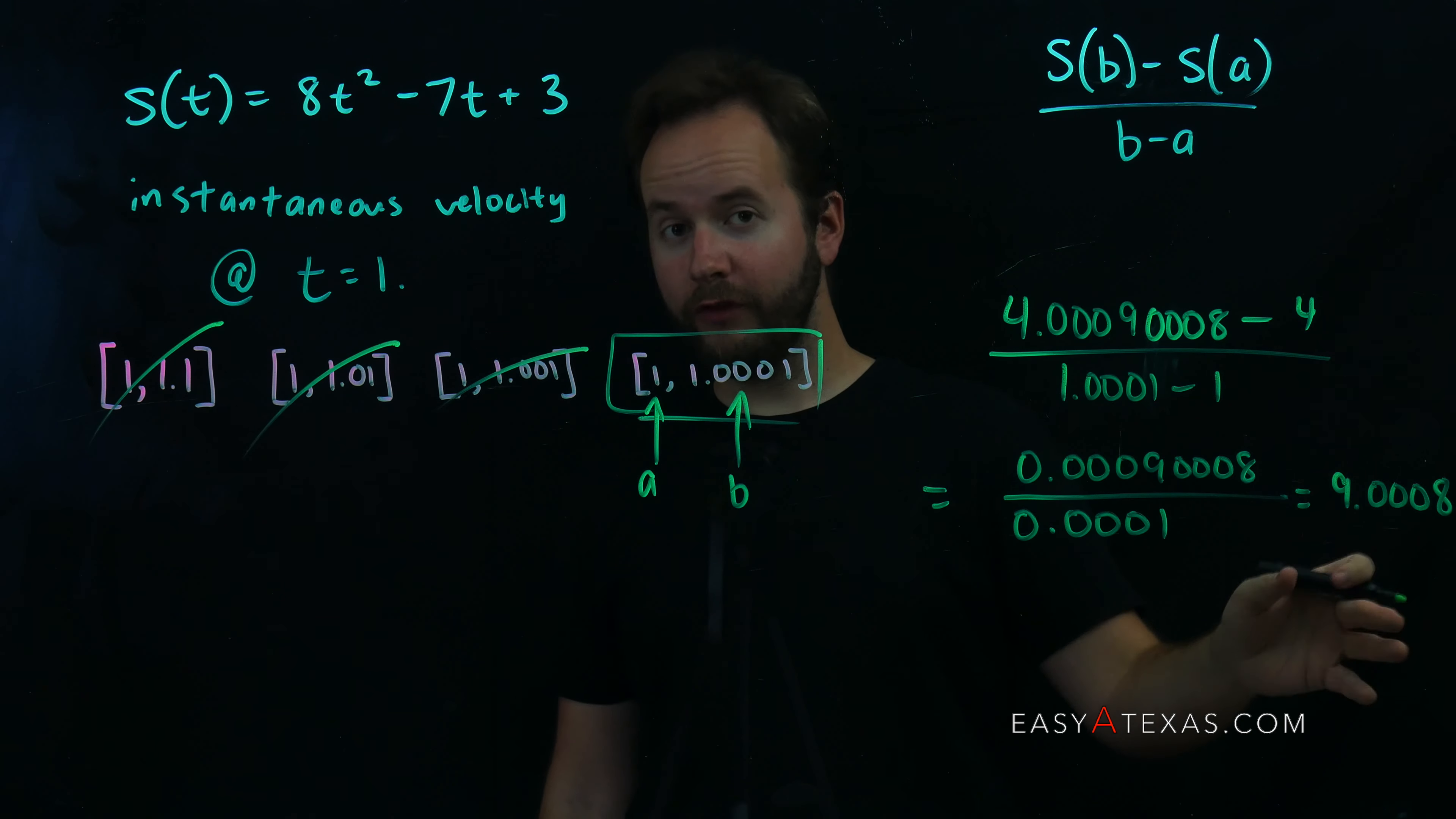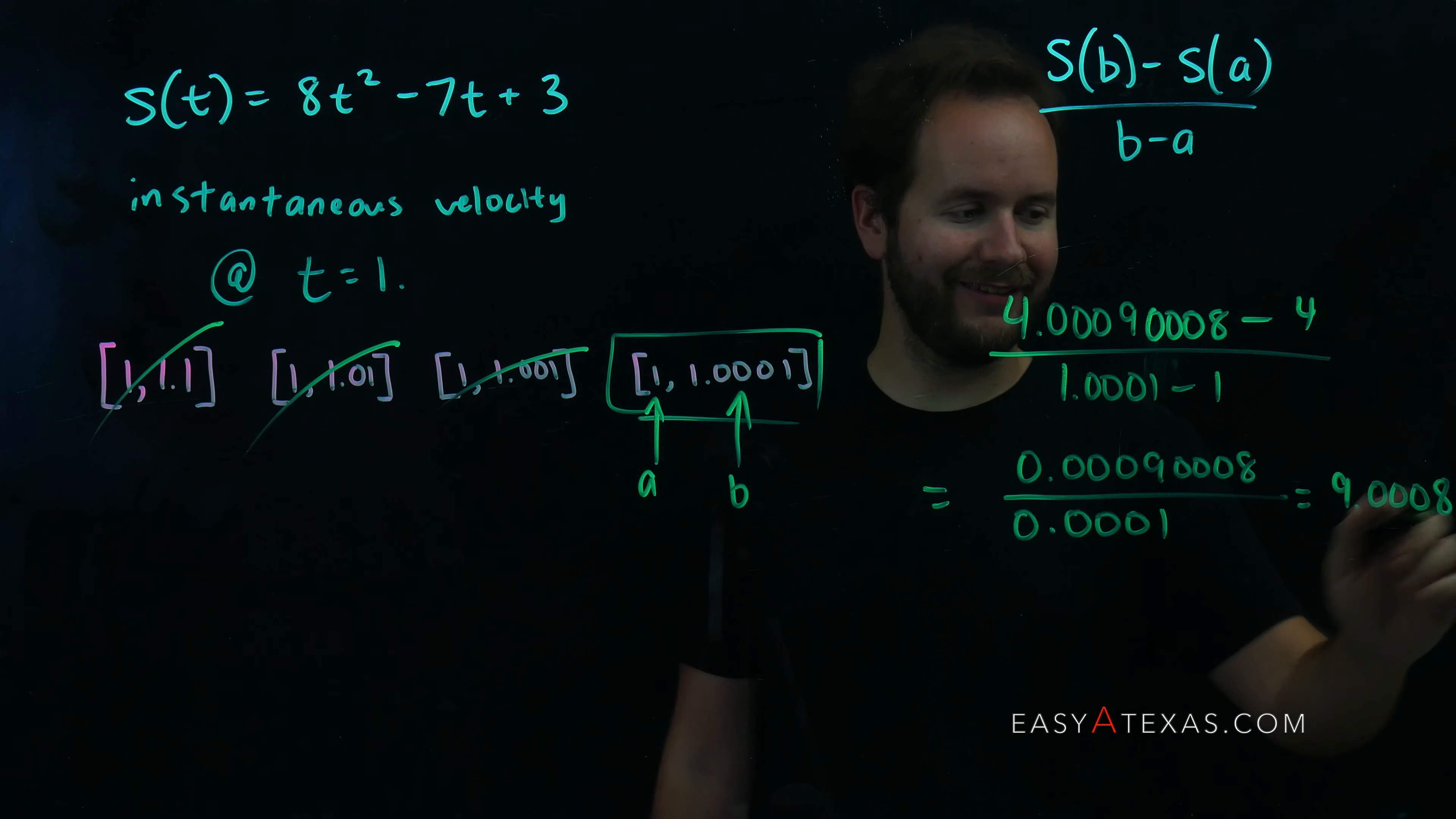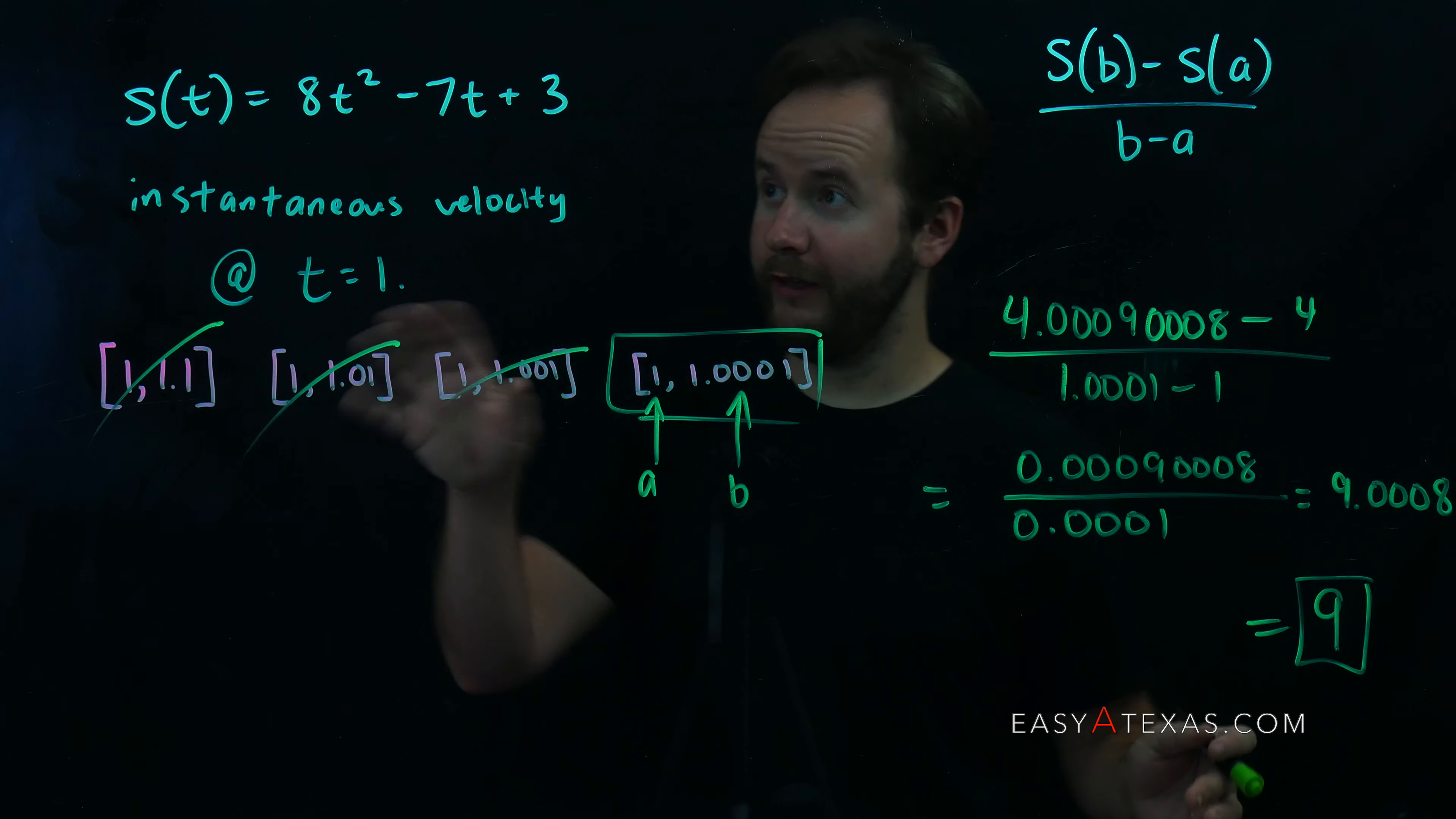Gee, this looks awfully close to what number? Well, the 0.0008 is kind of tiny, we can just kind of get rid of it, and so you could probably guess that the instantaneous velocity at t equals 1 equals 9.